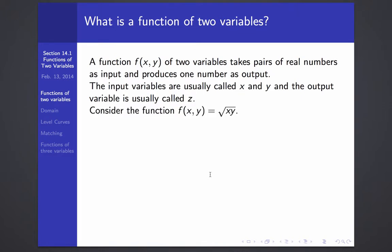Let's consider the function f(x,y) equals the square root of xy. For example, if we have the input where x is 3 and y is 12, that gives us the corresponding output of square root of 3 times 12 or 6. And we could plot that point on the x, y, z space using z to be the number 6.